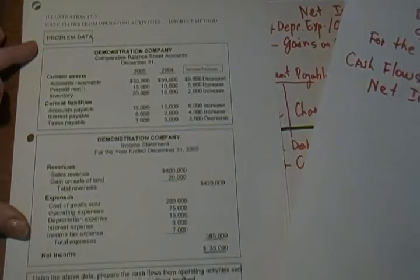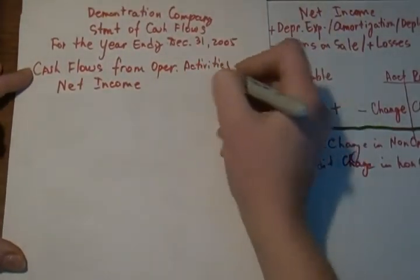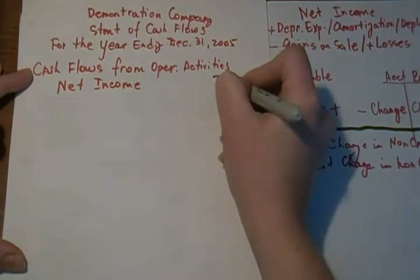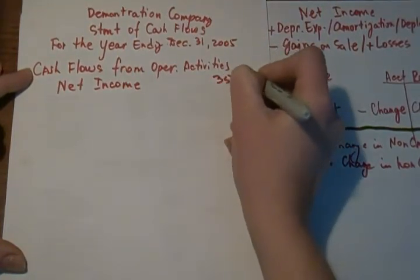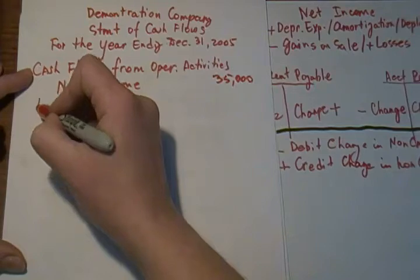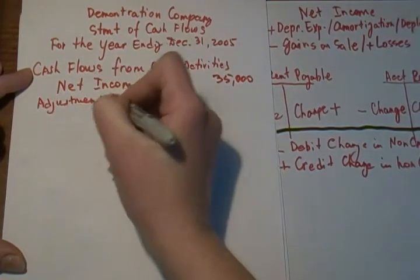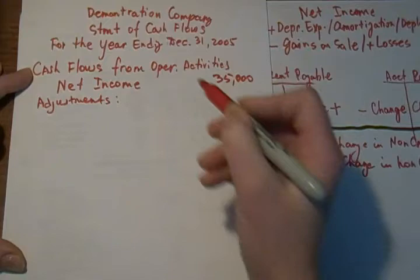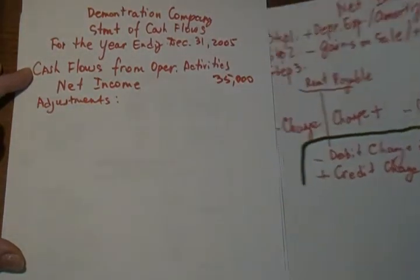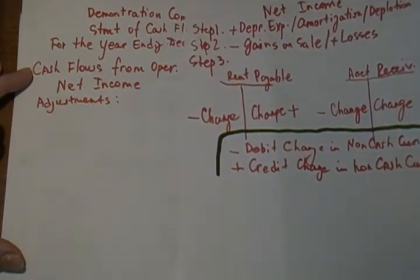The starting point is net income, which will come from your income statement — the very bottom — $135,000. We will follow up with adjustments to that net income. The very first one, if you remember step one, is to find your depreciation, amortization, or depletion.